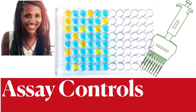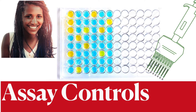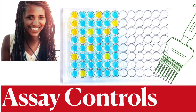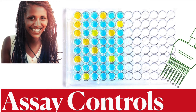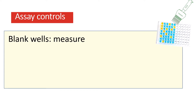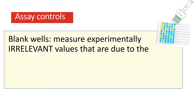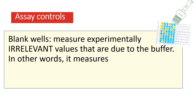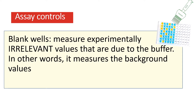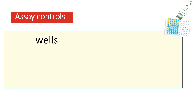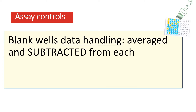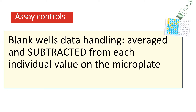When you're doing an assay you want to have a sense of the data you collect relating to the biology that you're studying, and not related to the instrument, equipment, or the assay technique itself. There's this idea of normalization, and in the ELISA setting you need a blank well. These blank wells allow you to subtract information that is irrelevant to the actual assay — information due to the buffer used for the enzyme reactions. The blanks measure background values; they are averaged and then subtracted from each well on the microplate to remove information irrelevant to the target biology.